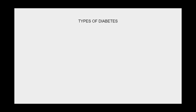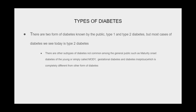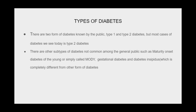There are two forms of diabetes well known to the public: type 1 and type 2 diabetes. Most cases seen today are type 2 diabetes. There are other subtypes not common among the general public, such as maturity onset diabetes of the young (MODY), gestational diabetes, and diabetes insipidus, which is completely different from other forms of diabetes.